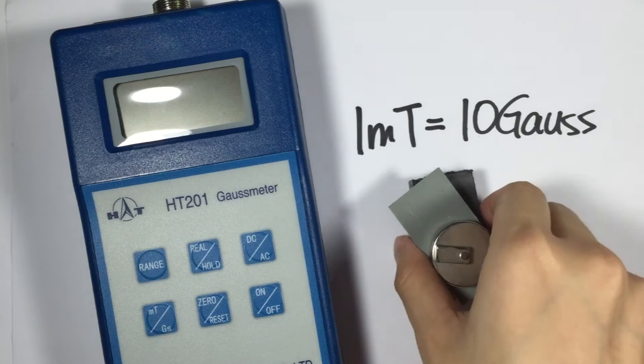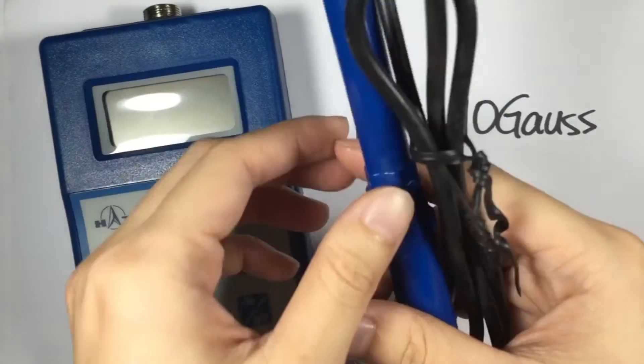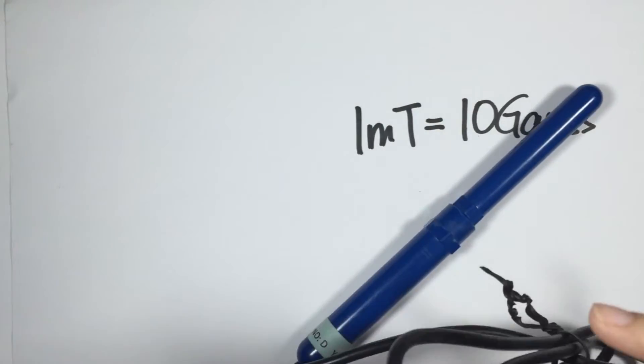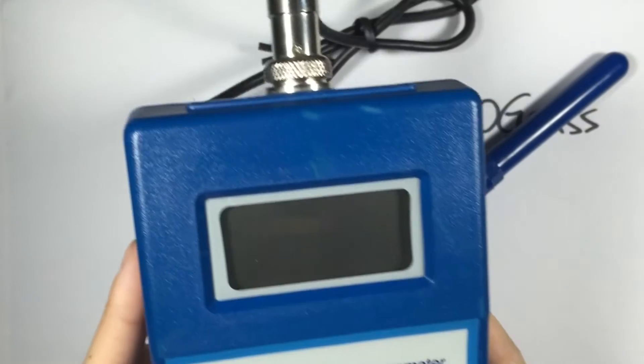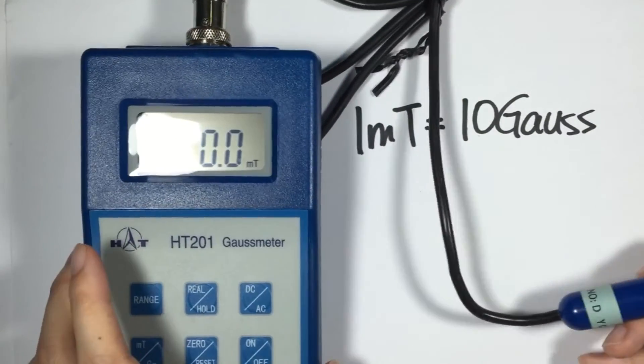Okay, first let's set up the gauss meter. This is a battery operated one. We connect the probe, this one's the probe, to the device. And turn it on. And we're all set.